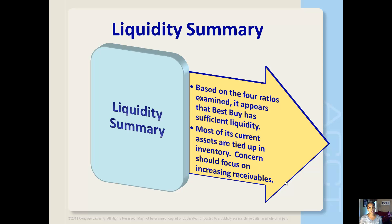One thing you might have noticed about all of these liquidity measures is that they are basically turnover measures, and in all four cases the higher the better — except maybe with the current and quick ratio, because if it's too high, then we've got cash sitting idle that might be better used elsewhere. But certainly on the inventory and receivables turnover, we want those to be as high as possible. The higher the turnover ratio, the higher the liquidity. Looking back at Best Buy, based on these four ratios, it appears that Best Buy is sufficiently liquid. Most of its current assets are tied up in inventory, so the concern should be focused on increasing receivables.